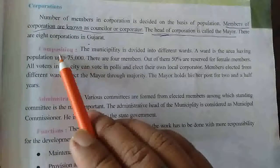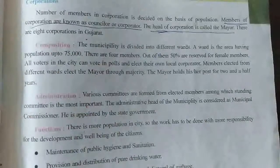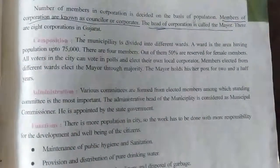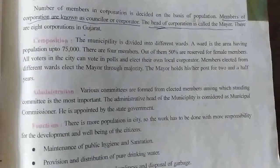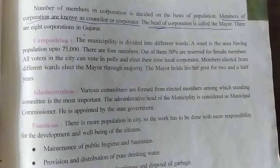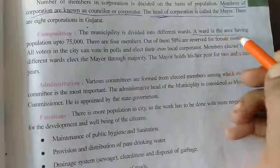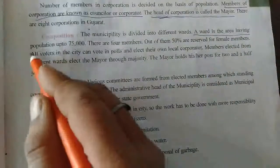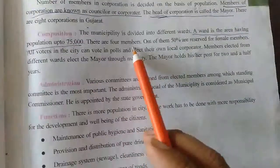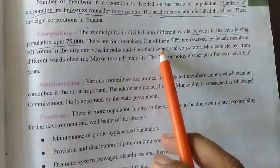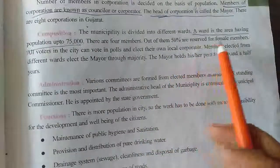Now, regarding composition — the formation of the corporation — the municipality is divided into different wards. A ward is an area having a population of up to 75,000. There are four members per ward, and 50% of those are reserved for female members.